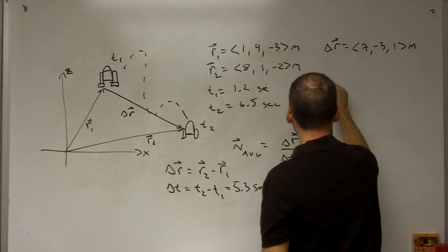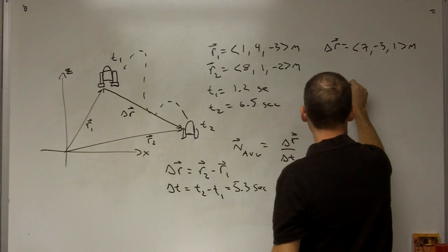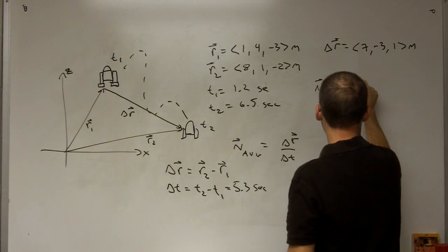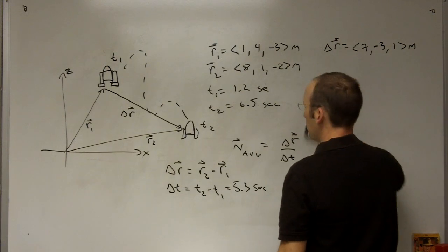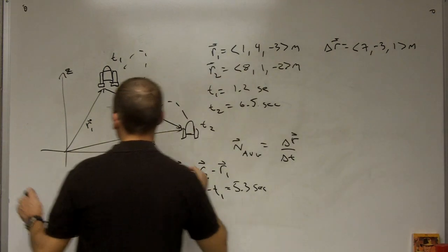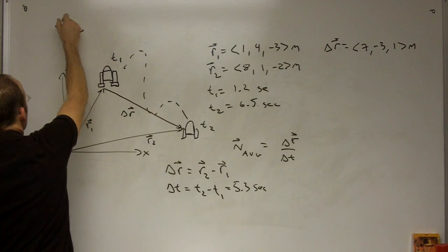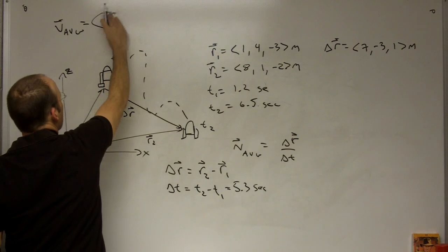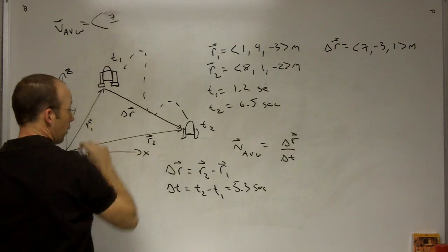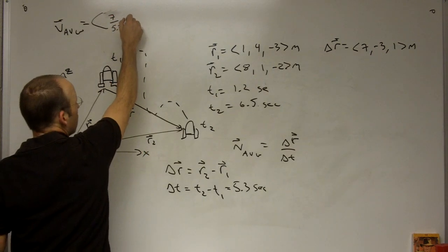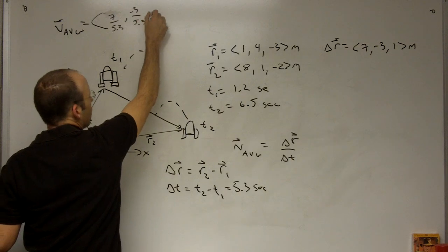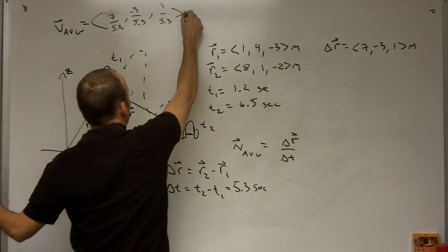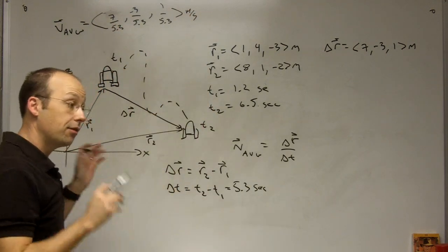So now I can calculate the average velocity. It's going to be this delta R divided by that delta T. So I can write that as... this may not show up in the video. Let me write it up here. I don't like to go out of order. But the average is going to be 7 over 5.3, negative 3 over 5.3, 1 over 5.3. And these have units of meters over seconds. This is meters per second. And that's my average velocity. That's the average velocity.